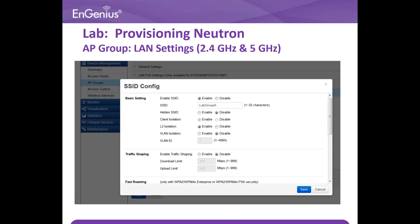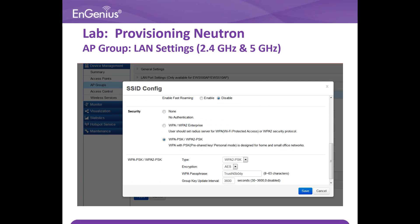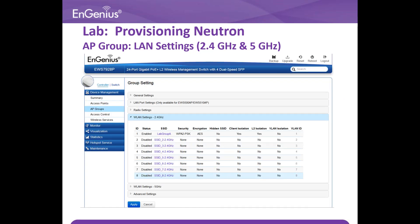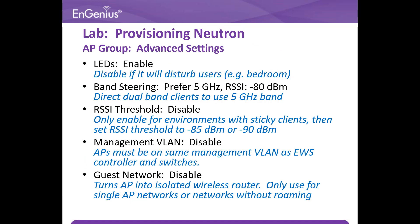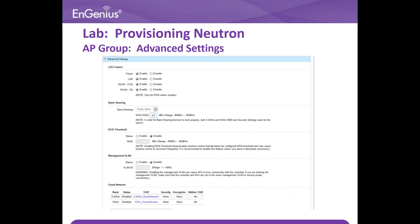This is where the SSID is configured when selecting 2.4 GHz and 5 GHz. This is the continuation of the SSID setting where security setting can be done. Once done, you should see the changes listed for the chosen SSID for both the 2.4 GHz and 5 GHz. Now make changes to the advanced settings according to the slide. This page shows the advanced settings for the AP group.